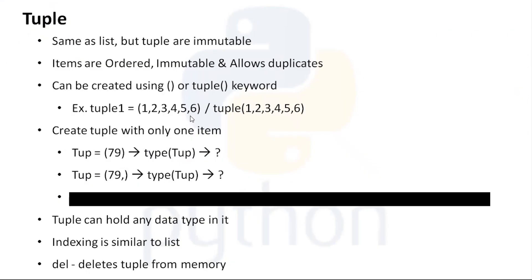Tuples are very useful when we need to have some static information — strictly constant information that shouldn't be changed, that no one should be able to modify. In that case we can use tuples instead of lists or sets, so that each and every item we have defined will be strictly unchangeable.